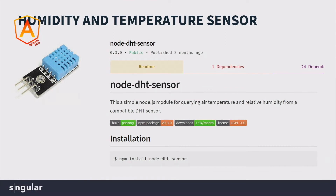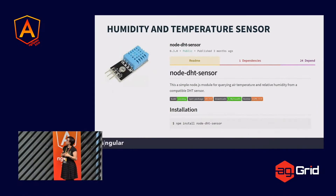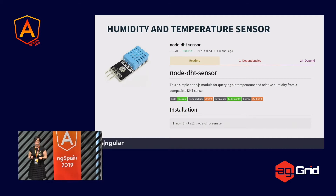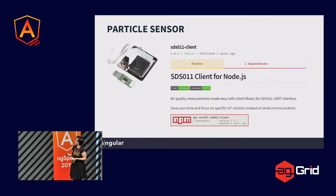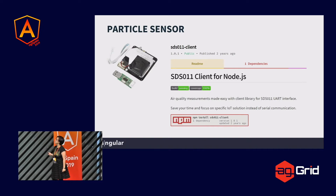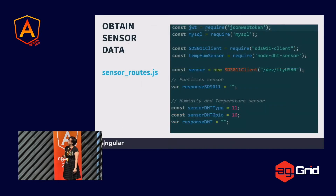The next file is to get the sensor data, and this is really the Angular of Things — getting data from sensors. The best part of using JavaScript or Angular of Things is that you have npm modules, and as in other development, these modules help you a lot. In this case, many sensors have a module that handles all the logic to connect and extract the data, so it's very easy to use. We only downloaded the specific modules for the temperature and humidity sensor and for the particle sensor, and then we started with the code.